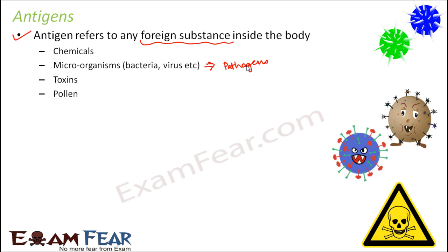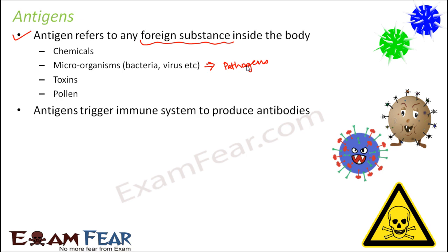Antigens trigger the immune system to produce antibodies. Antibodies are produced only when the body encounters antigens — just like a security guard who only starts fighting when a thief is encountered. B lymphocytes produce antibodies, and they will be produced only when antigens are encountered. When antigens are encountered, antibodies bind with them and that is how the antigens are destroyed.